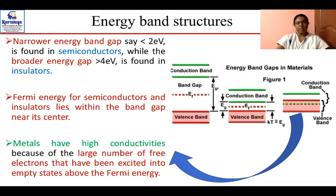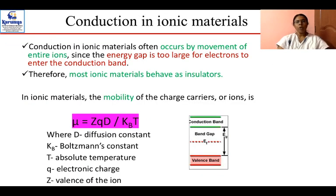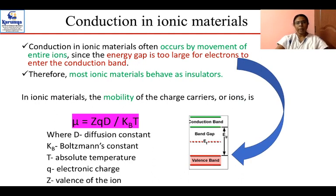Moving on to conduction in ionic materials: here it is the ions that move — conduction happens because of the movement of entire ions. In these materials the energy band gap is too large for electrons to enter the conduction band as they do in metals. As a result, most ionic materials behave as insulators, and the mobility value is also affected.